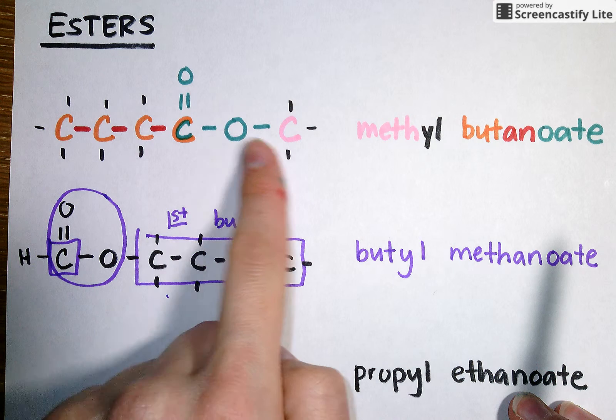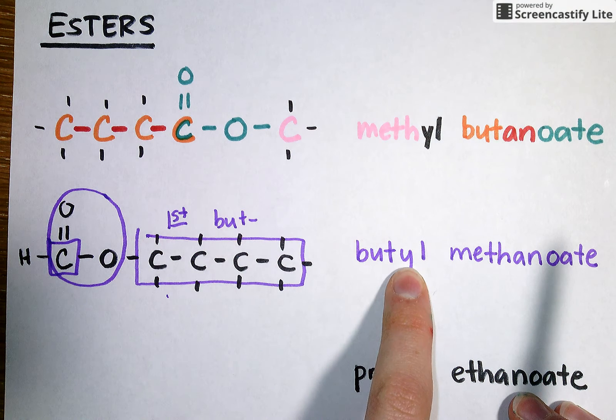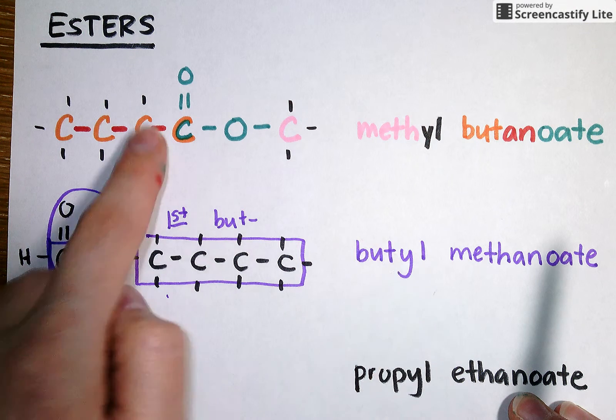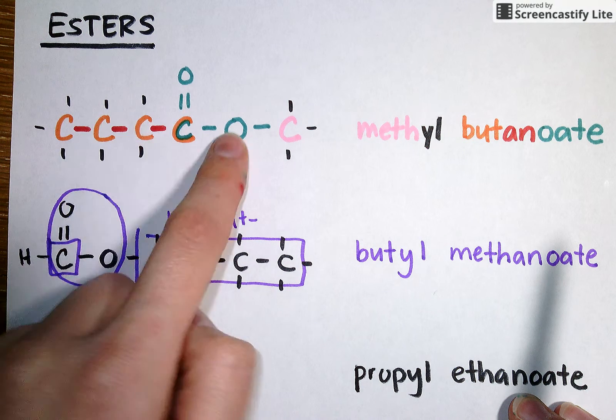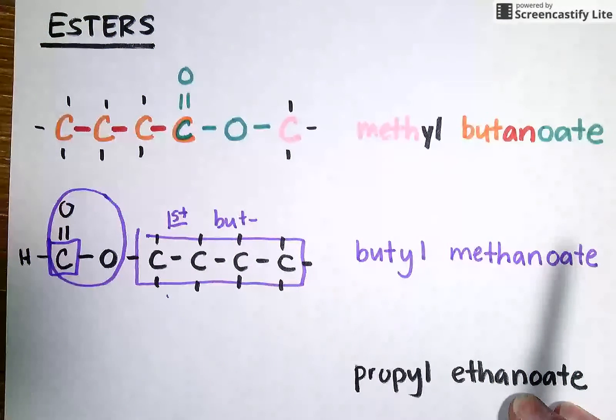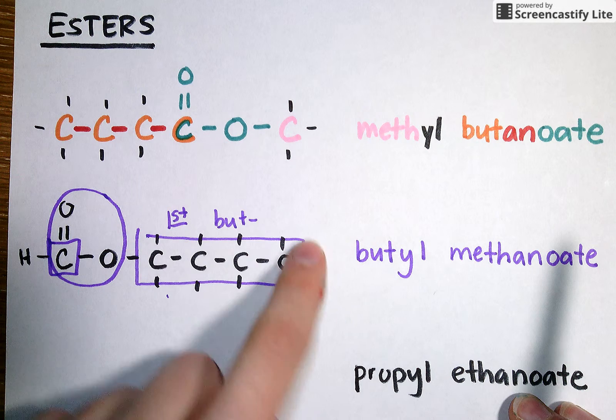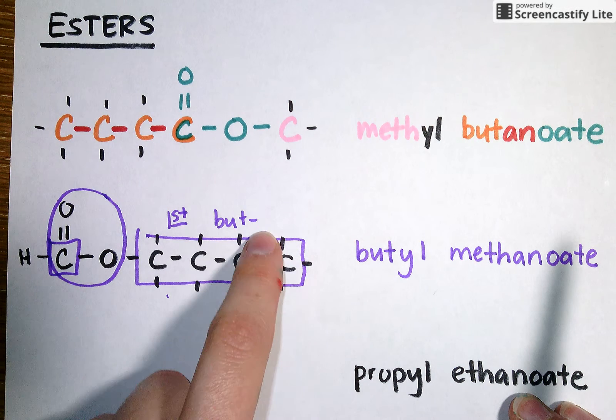Notice that these two molecules are related but have very different names because of the arrangement of the carbon chains. When the four carbons came after the second O, butyl came first. When the four carbons came before this O and were part of the double bond, it was in the second part of the name. So be very, very careful with esters that you're naming this side not affiliated with the double bond first.